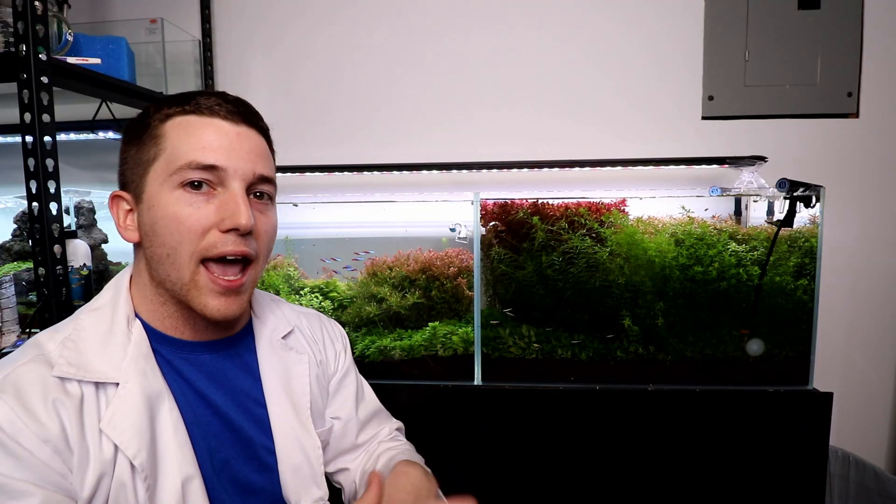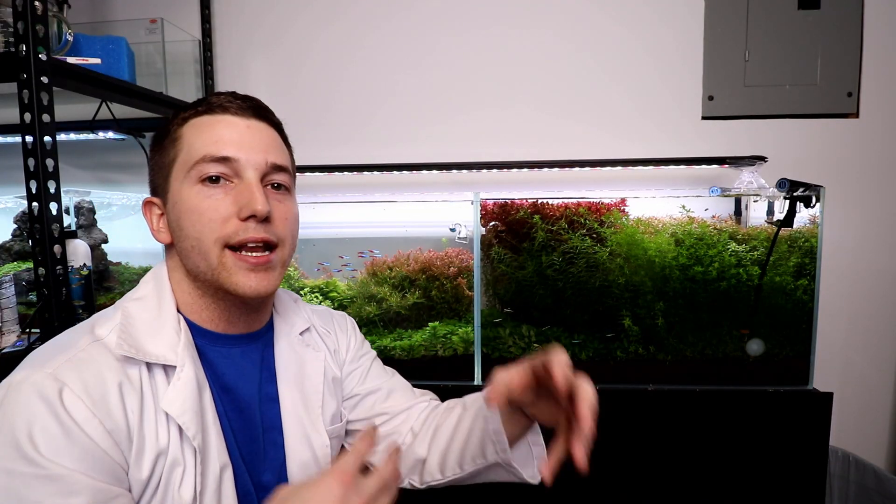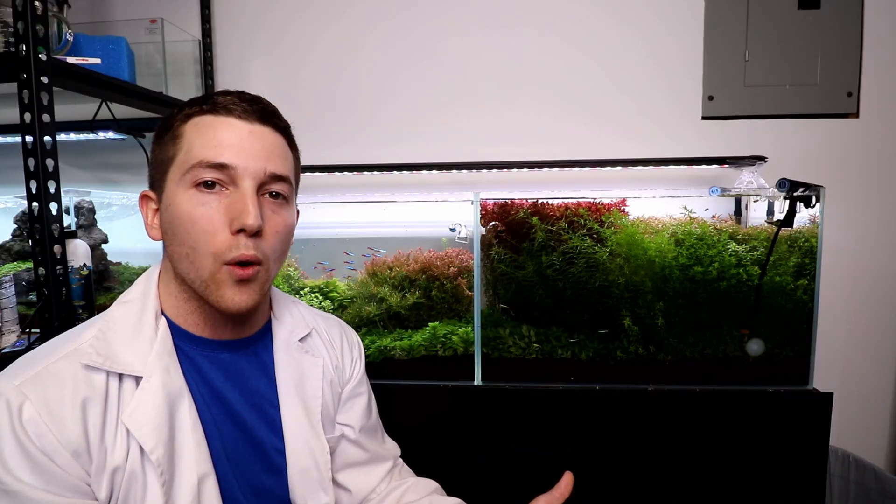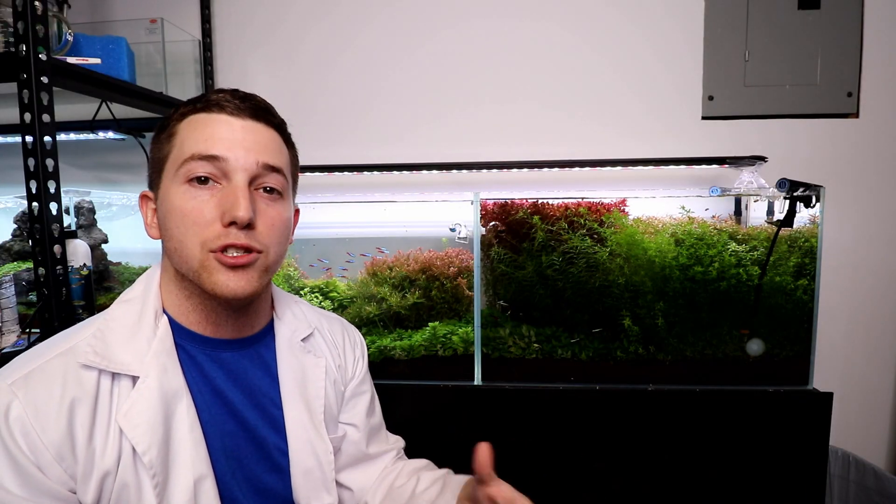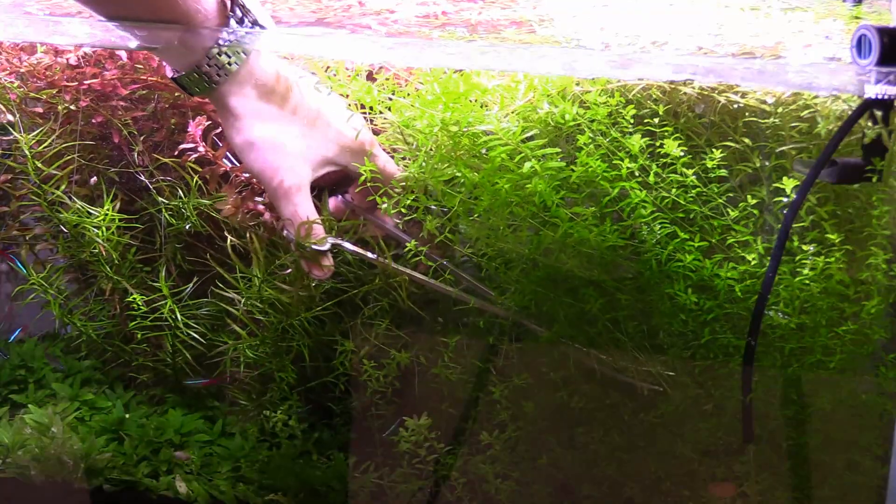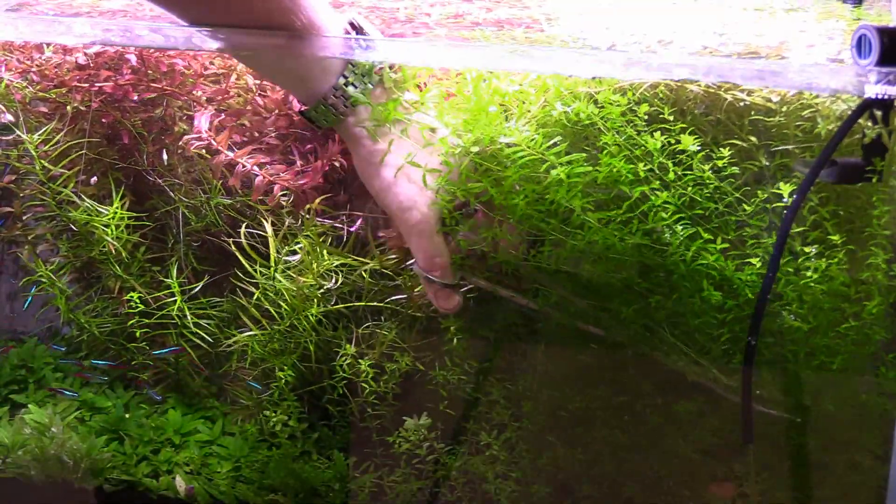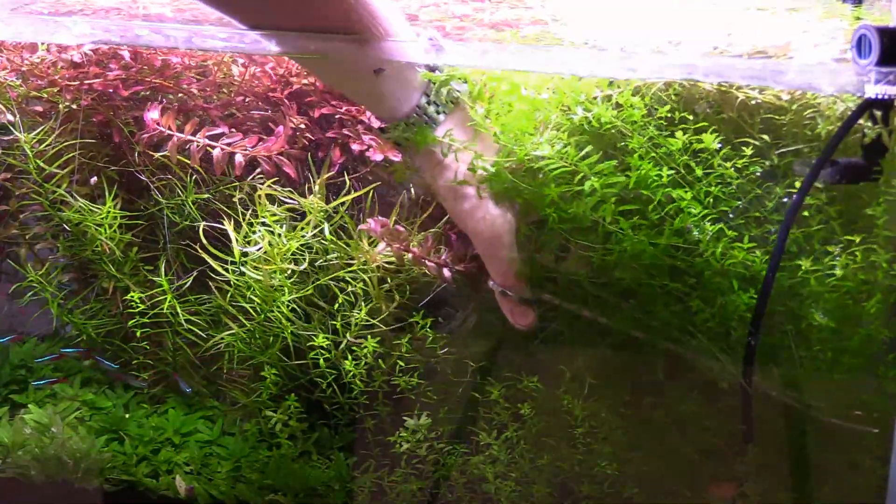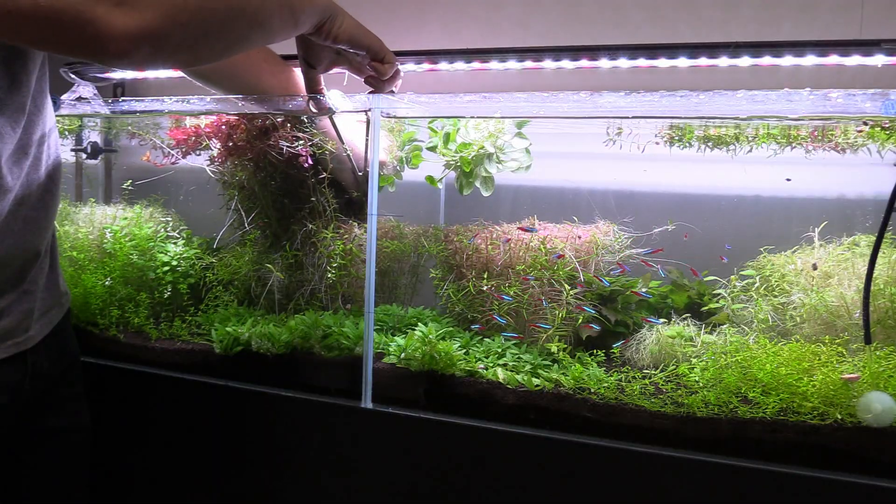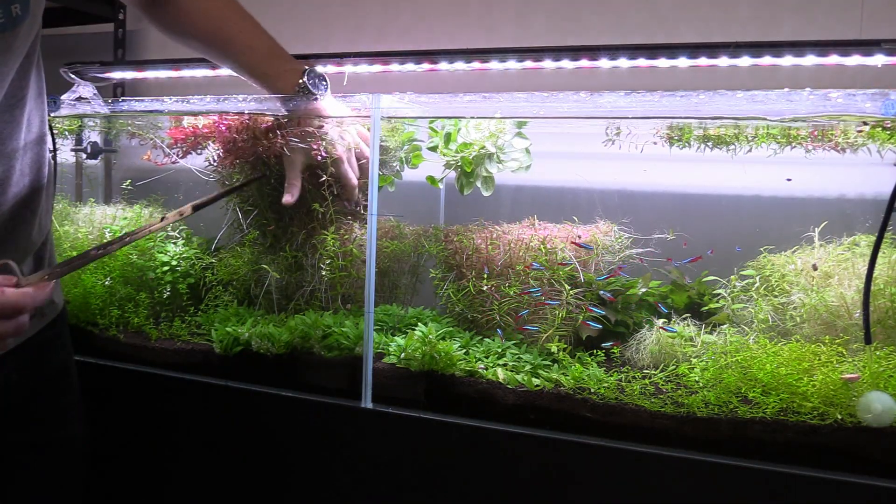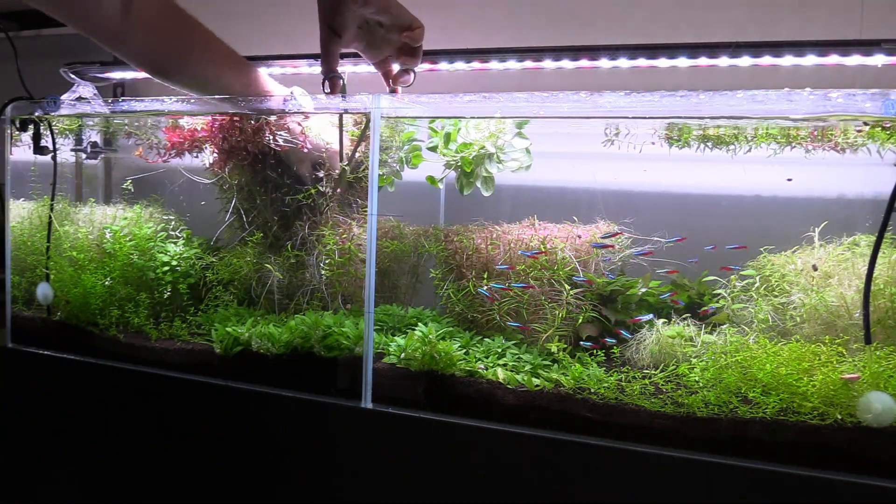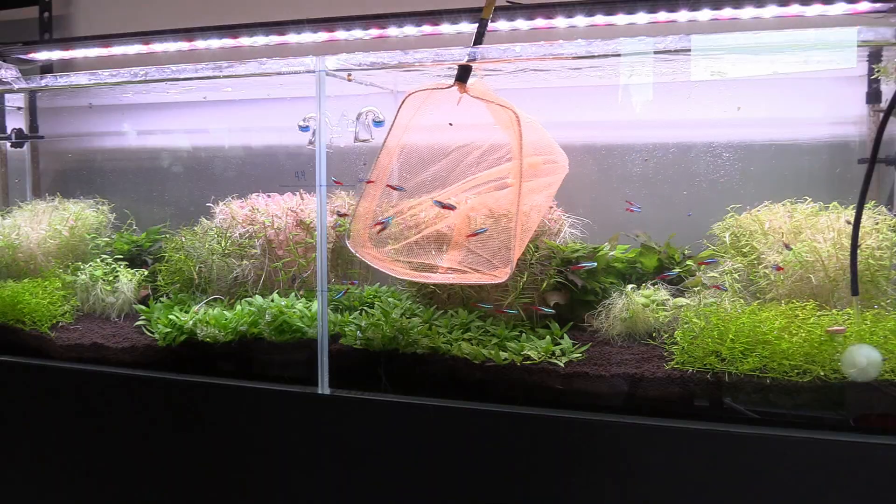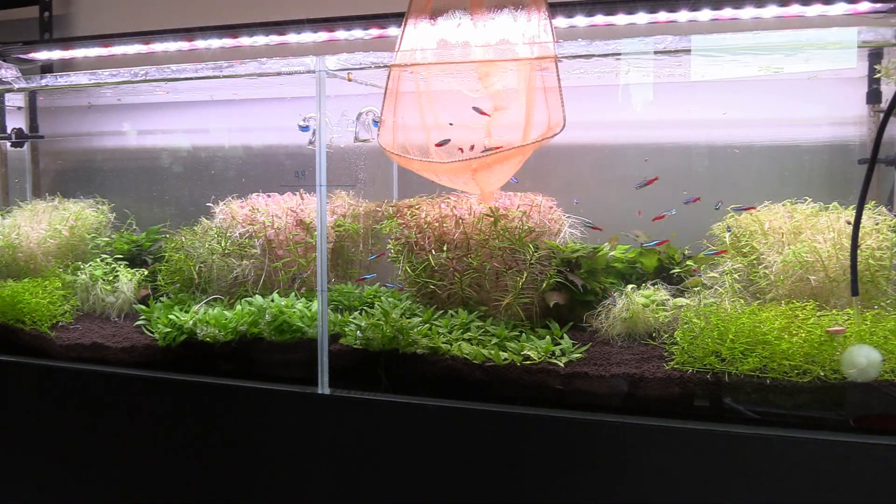But before we start to look at graphs and the picture-every-day kind of time lapse of these two aquariums, let's set this up a little bit better so you have a better understanding of what we did here. The first thing we did was chop the two aquariums down to roughly the same level. Remember, we were using this tank for a different experiment, the plants had grown at variable rates in both of the tanks.